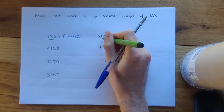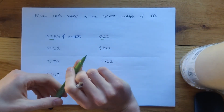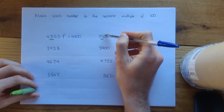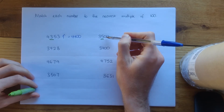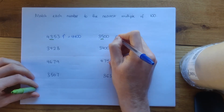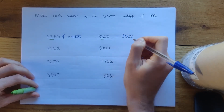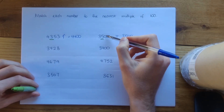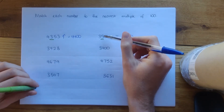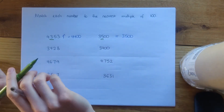Let's have a go at a few more. This one: to round to the nearest hundred we look at the tens column — we've got zero in the tens column. There's no reason to go up to 600; the closest hundred is the number it's already on. 3,500 is already a multiple of 100, so we don't need to round that one.